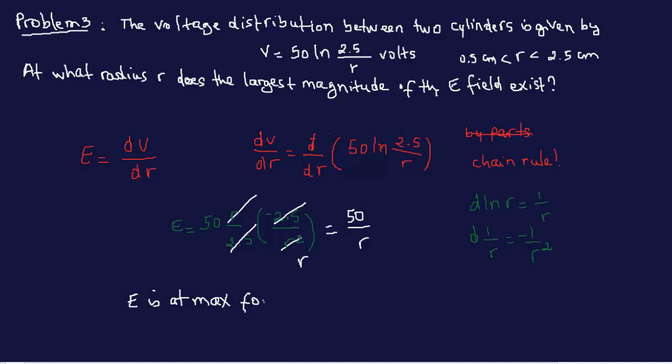Now, the question here is, what radius does the largest magnitude of the E field exist? The largest value would be when you have the smallest value of R. The smallest value of R between 0.5 and 2.5 is 0.5. So the answer is R equals 0.5 centimeters. That's the final answer.